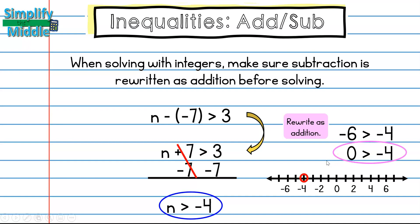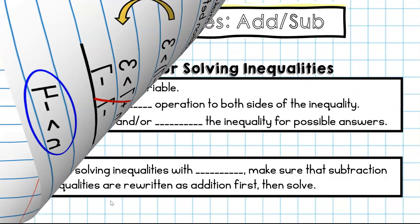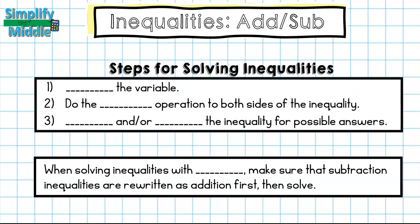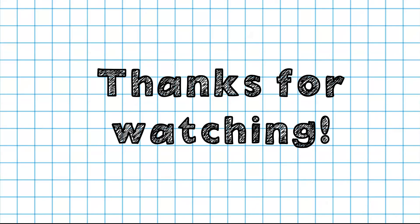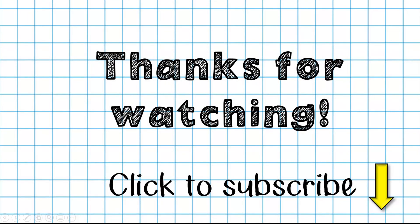Let's recap the steps for solving inequalities. Step one: isolate the variable. Step two: do the inverse operation to both sides. Step three: graph or list the inequality's possible answers. Remember, when solving inequalities with integers, rewrite any subtraction as addition first, then solve. That wraps up our lesson — thanks for tuning in. Feel free to subscribe for this and other lessons. Until next time!